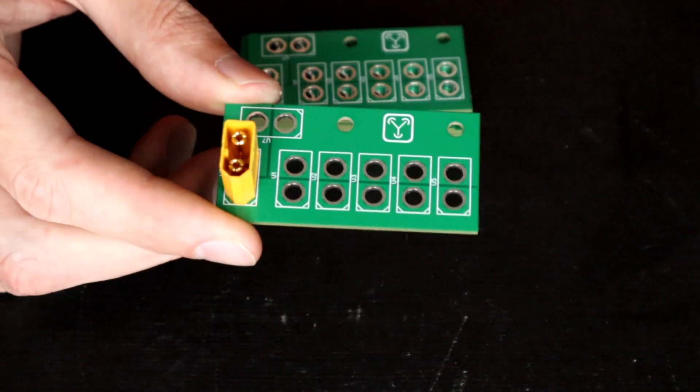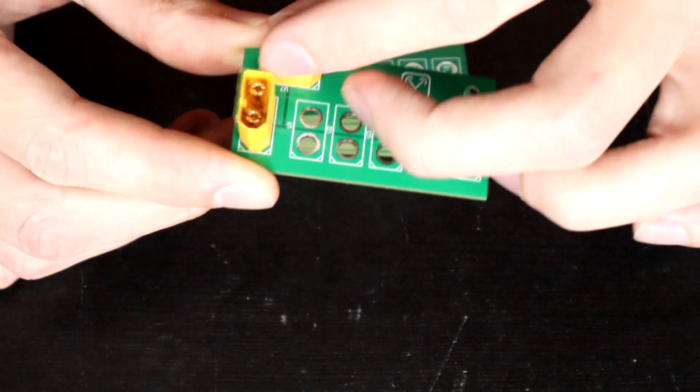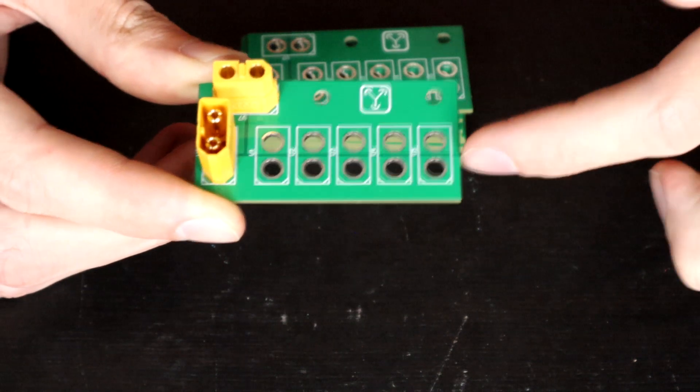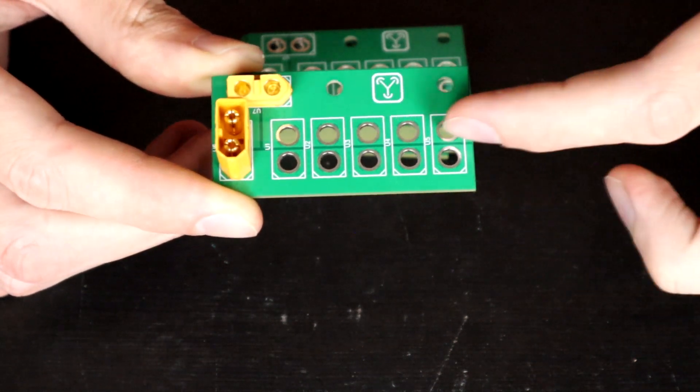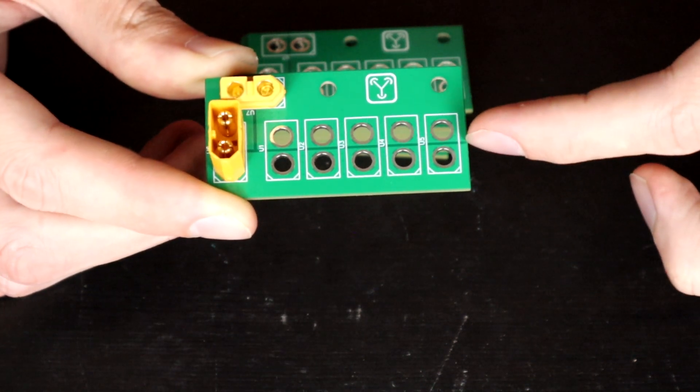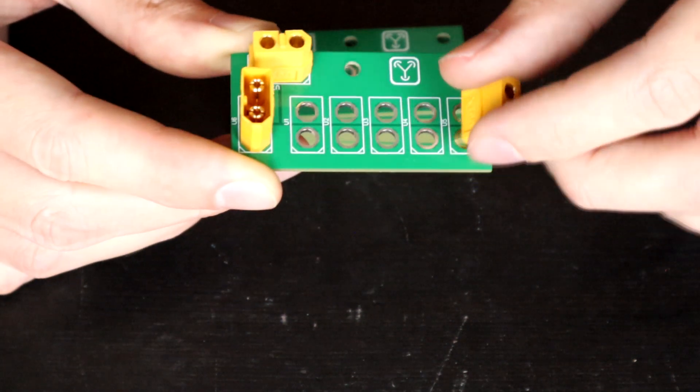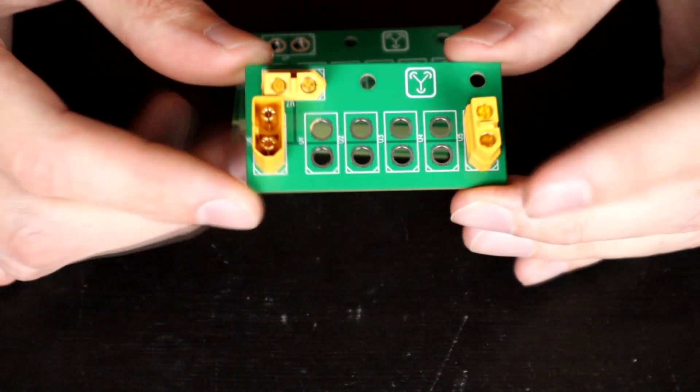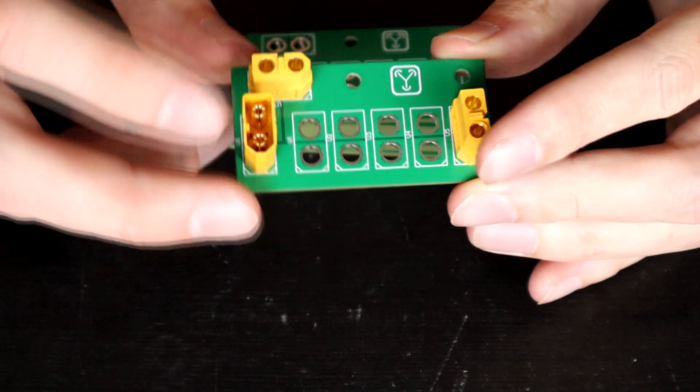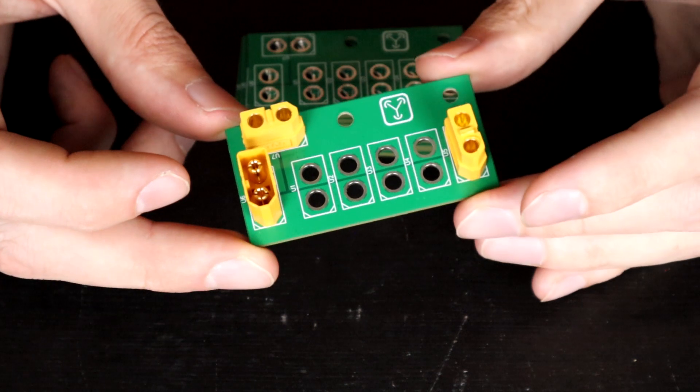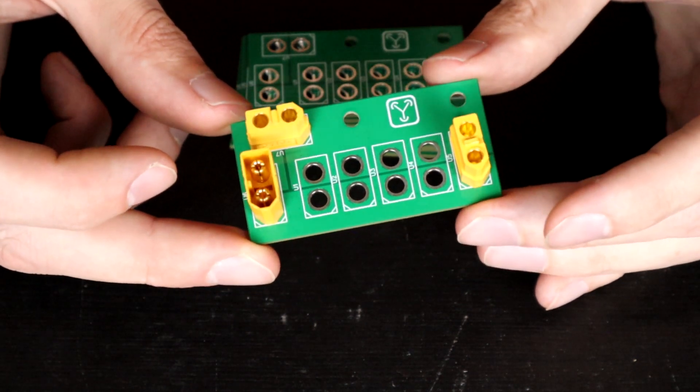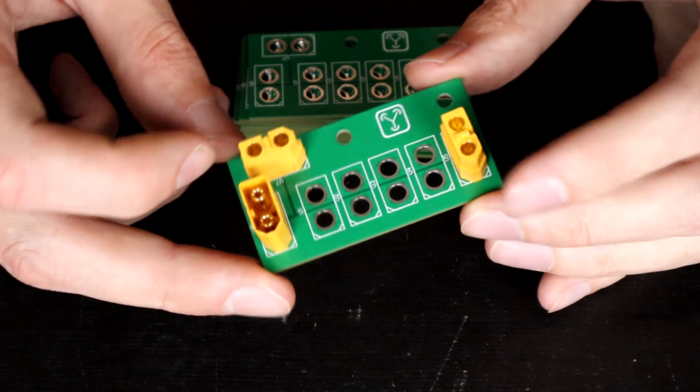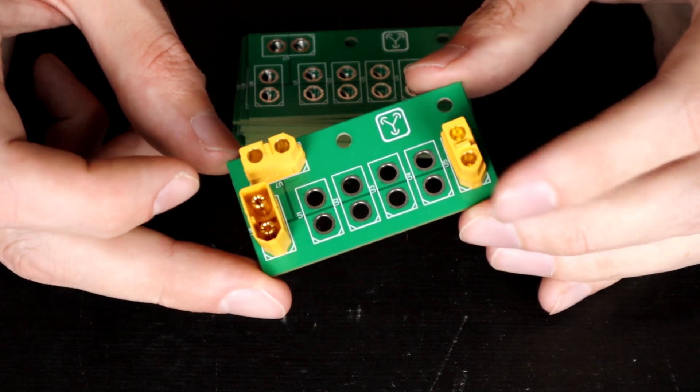That there is the battery connection. Then we've got this one here, which is for the link. And then we've got a whole row that allows for four-wheel drive with individual ESCs per drive, and also a weapon of some description. So, this is supposed to be a power distribution board for a featherweight.